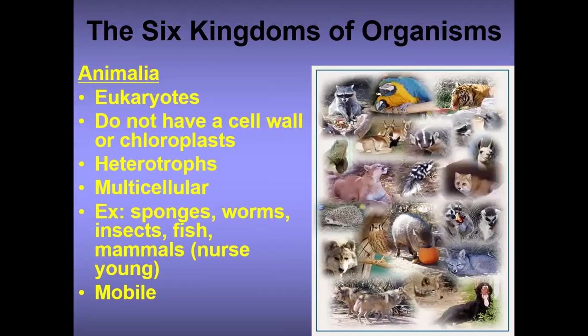Animalia is the most popular kingdom. They are eukaryotes and do not have a cell wall or chloroplasts. They are heterotrophs and multicellular. Examples include sponges, worms, insects, fish, and mammals. Mammals nurse their young and are mobile.